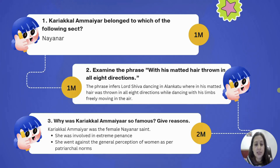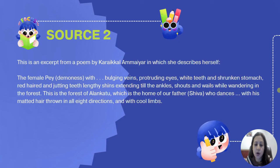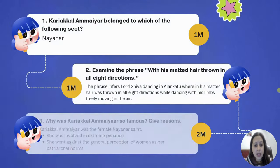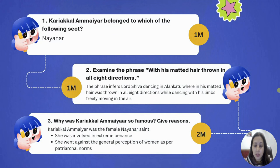The second question: examine the phrase 'with his matted hair thrown in all 8 directions.' The word 'his' is used for Lord Shiva, because she worshipped Shiva. This phrase refers to Lord Shiva dancing in Alankatu, throwing his hair in all 8 directions and moving his limbs freely in the air.